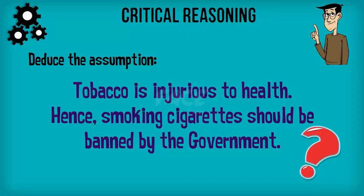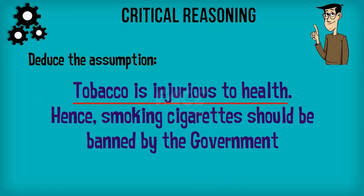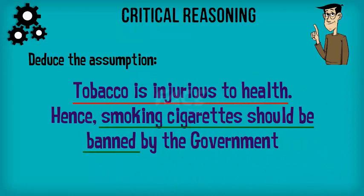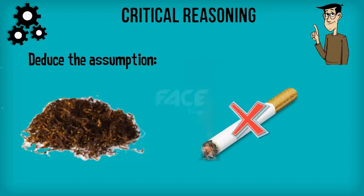Look at the argument carefully. The author is clear that tobacco is injurious to health, but he comes up with a conclusion which states smoking cigarettes must be banned. Thus, it is assumed that tobacco only in the form of smoking cigarettes is injurious to health and hence must be banned. It's easy, isn't it?